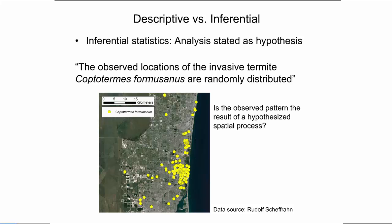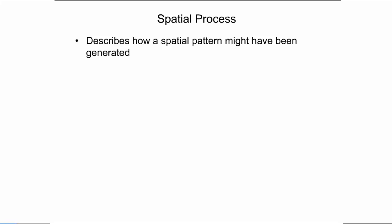This example shows that observed point patterns provide clues to a possible causal spatial process. A spatial process is a description of how a spatial pattern might have been generated. A distinction can be made between deterministic and stochastic processes. If a spatial process leads to the same outcome each time it is executed, this spatial process is called deterministic.